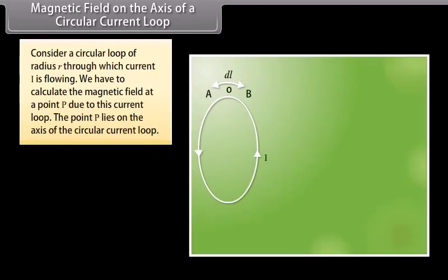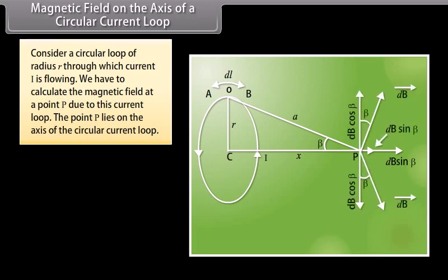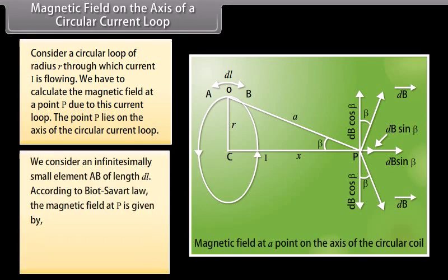Magnetic Field on the Axis of a Circular Current Loop. Consider a circular loop of radius R through which current I is flowing. We have to calculate the magnetic field at a point P on the axis of the circular current loop. We consider an infinitesimally small element AB of length DL. According to Biot-Savart Law,